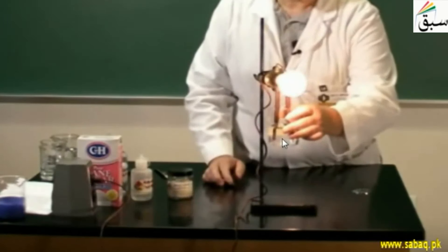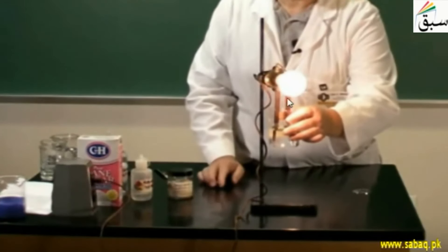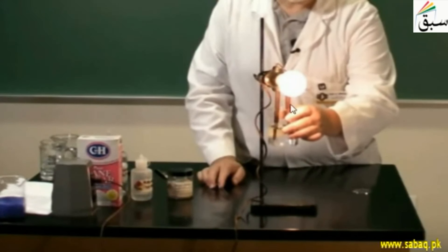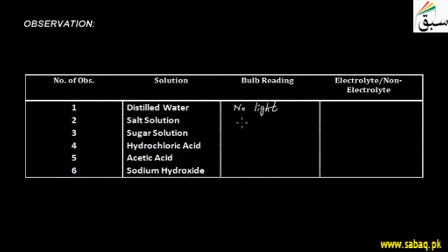Now we have dipped the electrodes into the salt solution. The light is on — the bulb turned on. So with salt solution we can make the bulb light up.